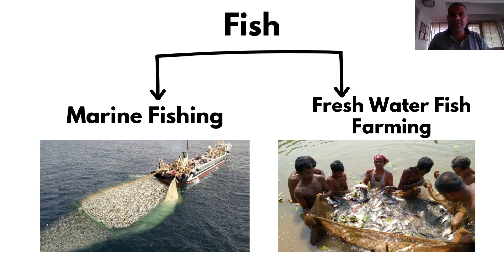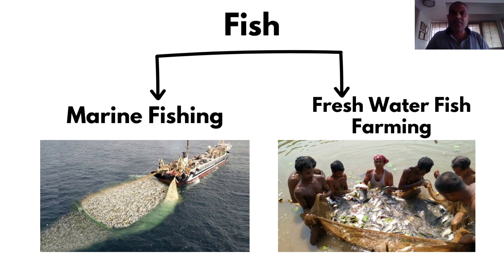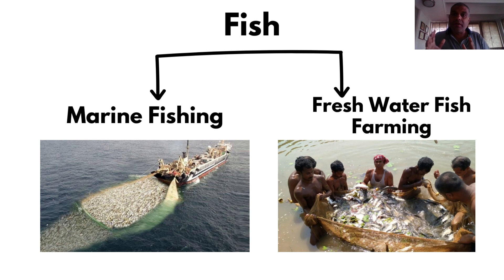Let's come to fishing. There are broadly two types of fishing: marine fishing in the seas and oceans, and freshwater fishing in ponds, lakes, and rivers. There are also two different ways of obtaining fish: capture - going with nets and rods to catch wild fish - and fish farming, where we actually grow fish in tanks, ponds, rivers, and sometimes in the oceans, and then later harvest them.